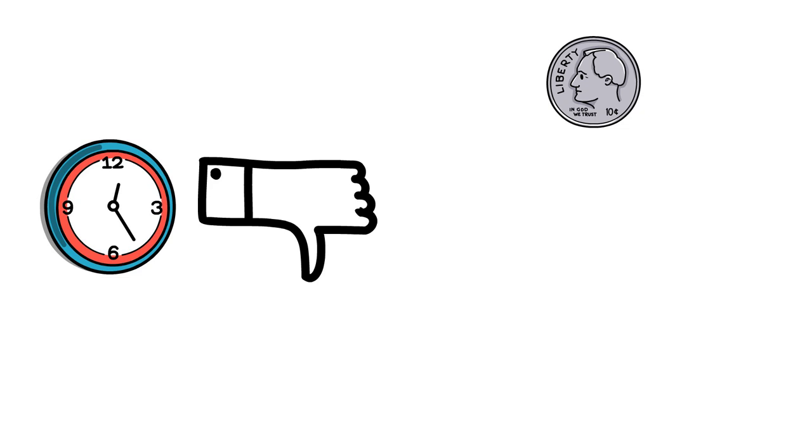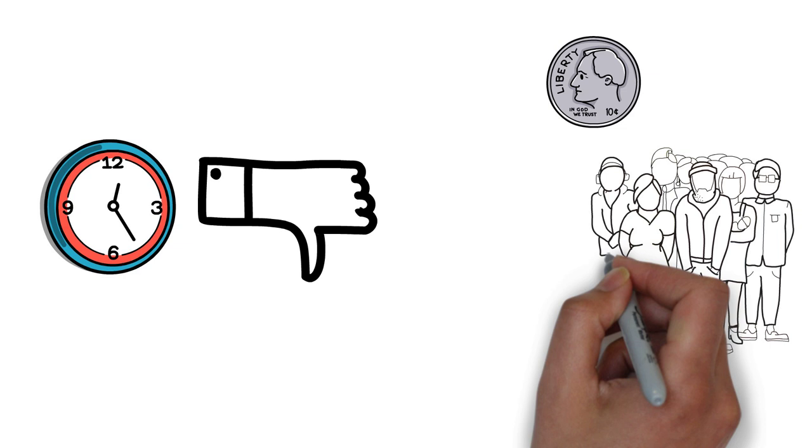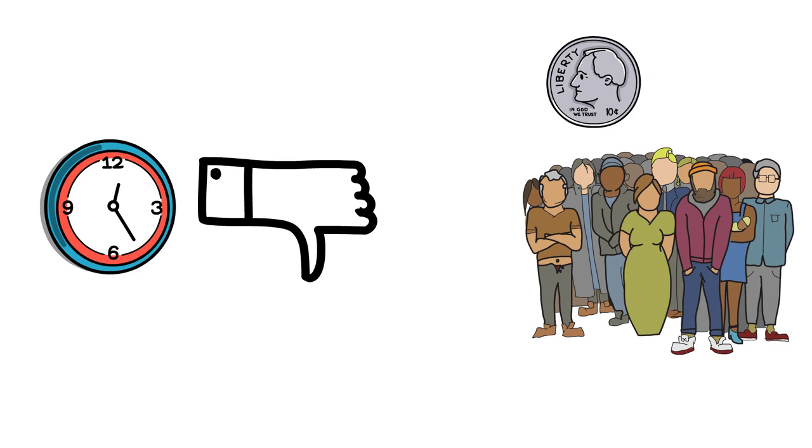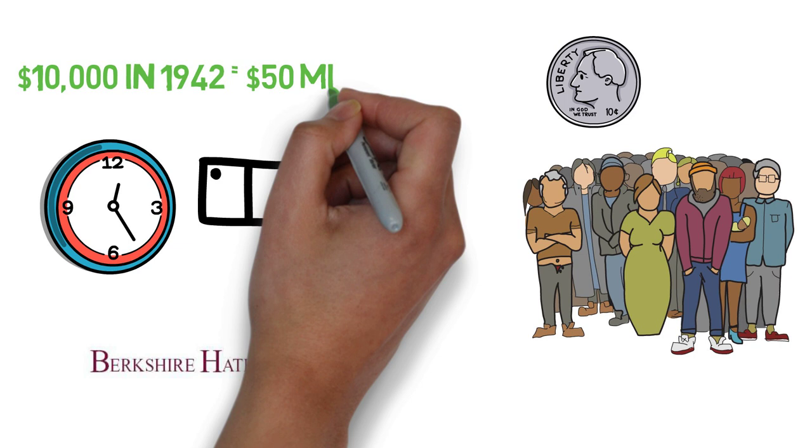In fact, Warren Buffett suggests that investors put the majority of their money in an S&P 500 index fund. Perhaps this is partly due to the fact that his company, Berkshire Hathaway, fails to beat the market and, as he recently said, a $10,000 investment in the S&P 500 in 1942 would be worth over $50 million today.